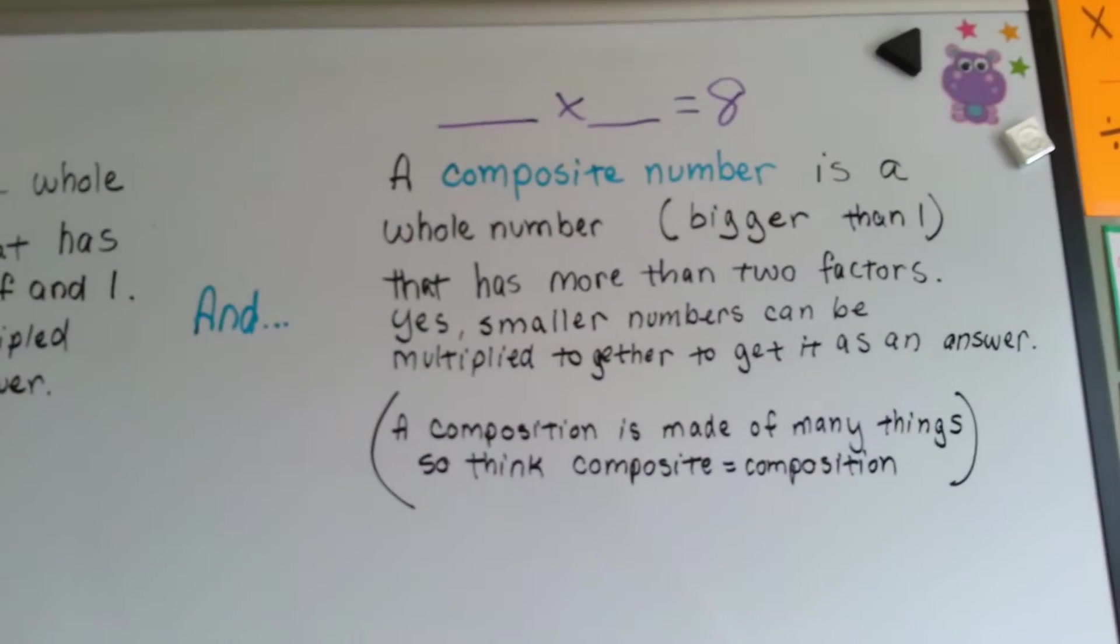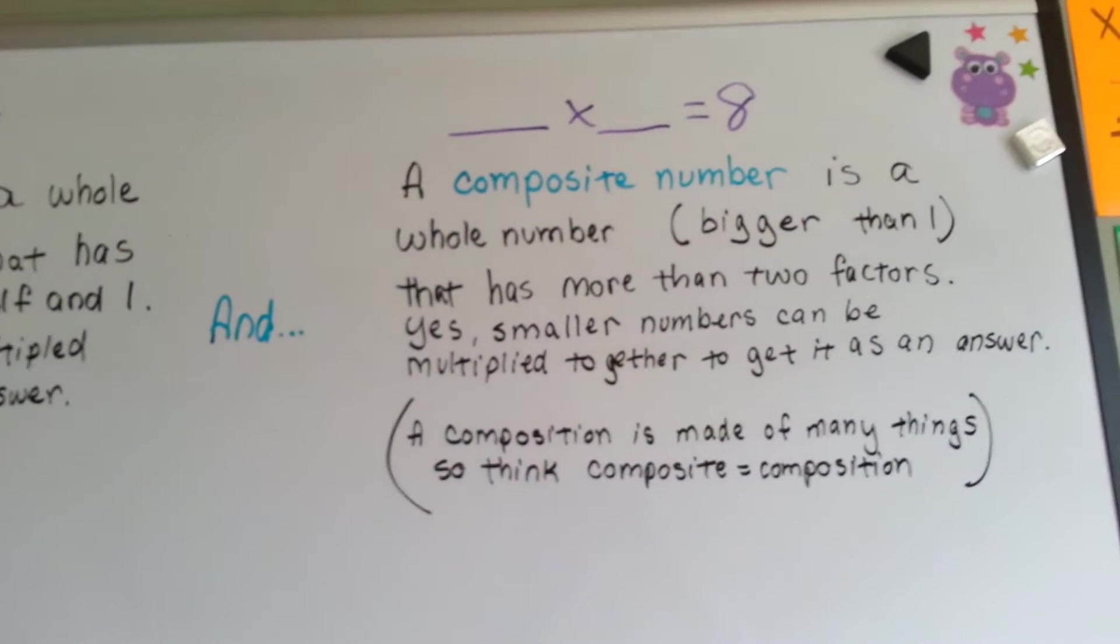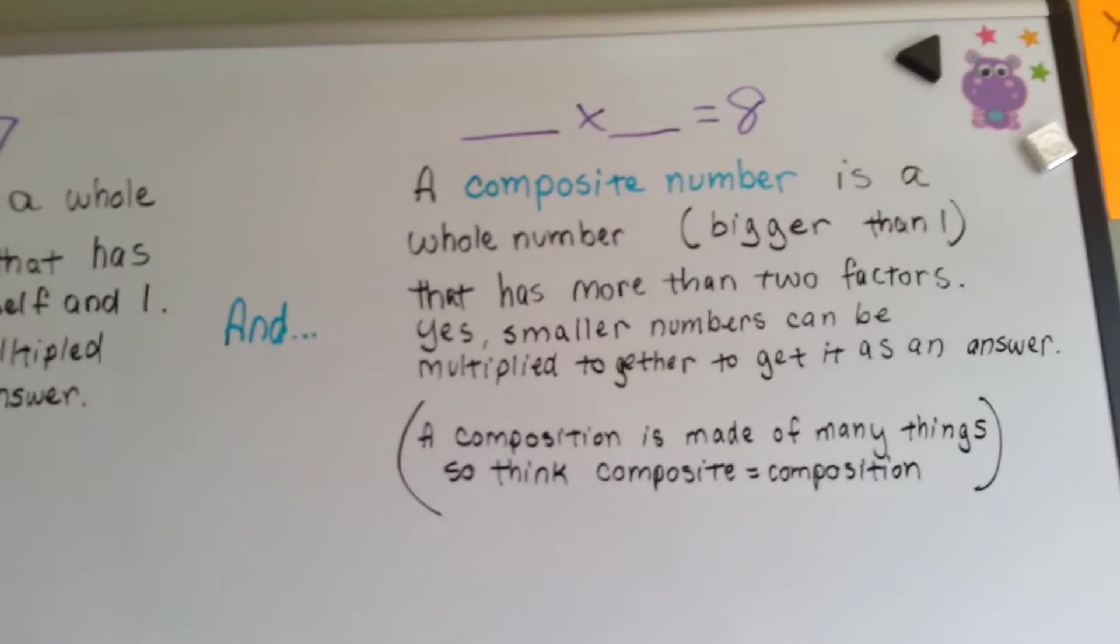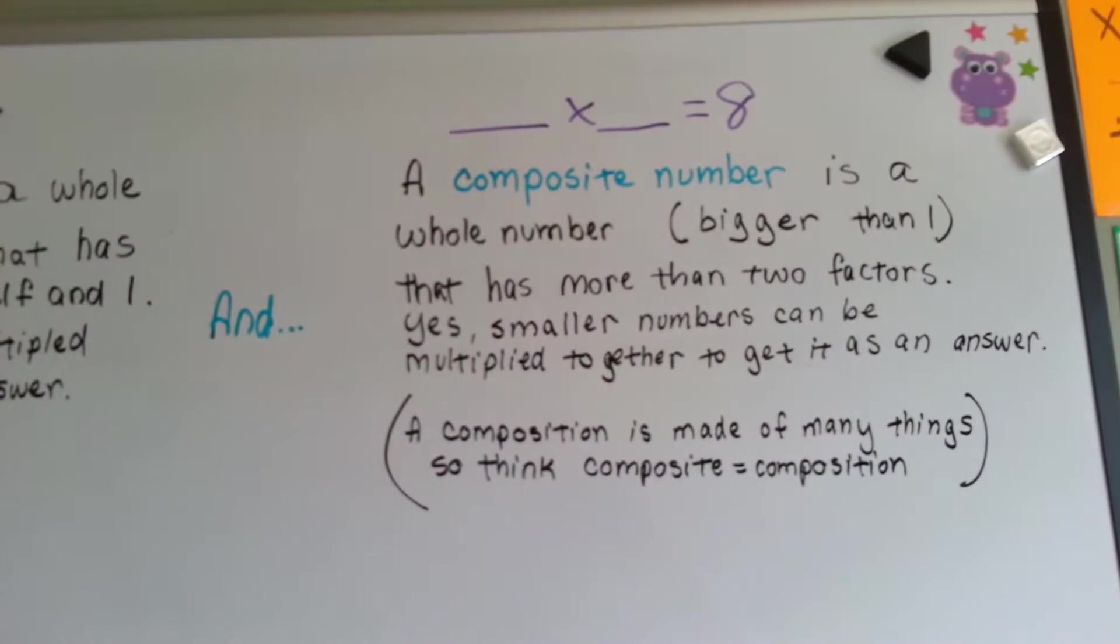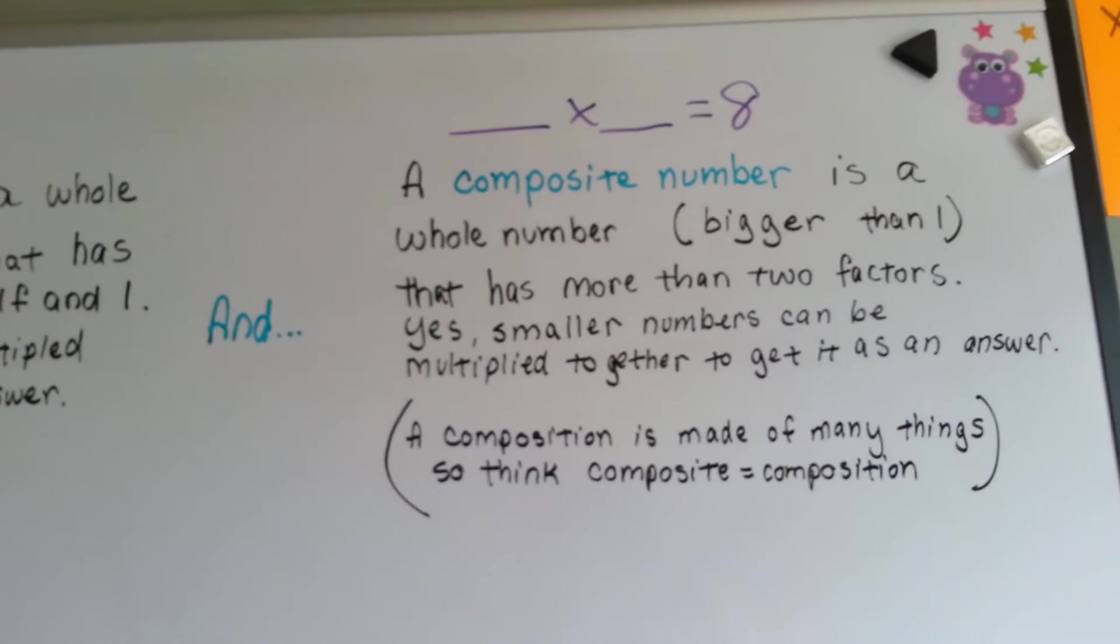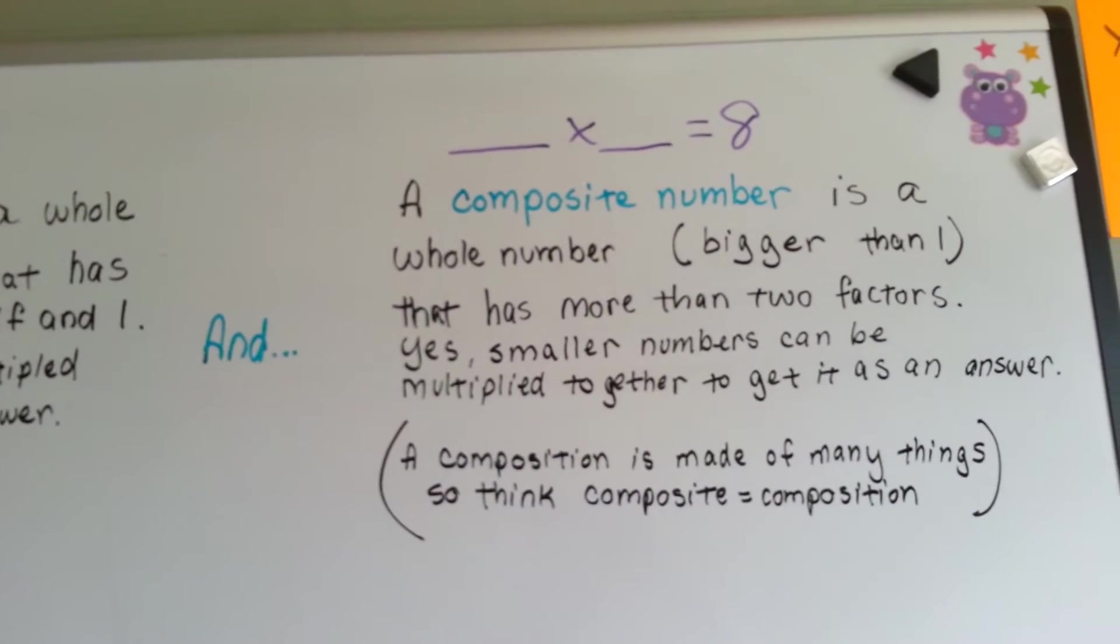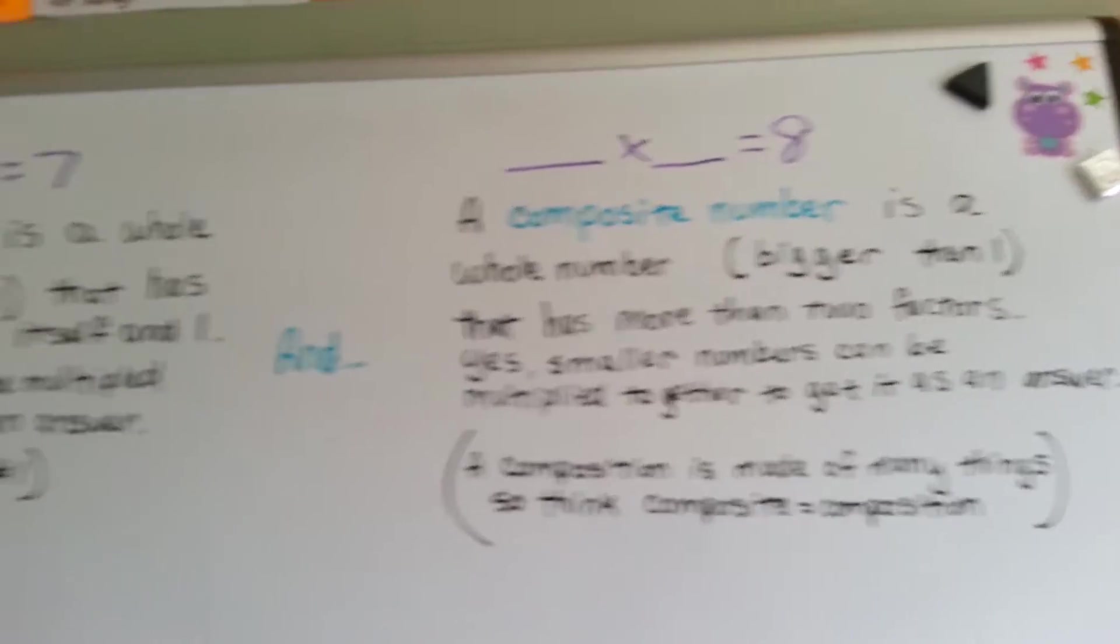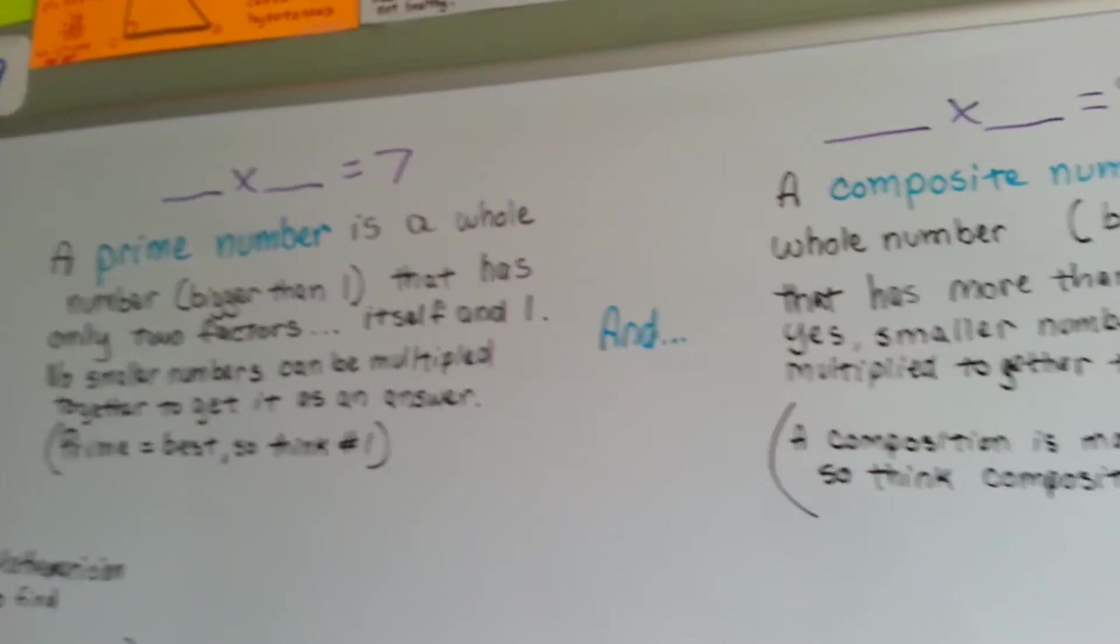Think of a composition, like a music composition or a written composition like an essay, and how many things it's made of. Think of composite like a composition. It's made up of many things. So composite is many things and prime is just one.